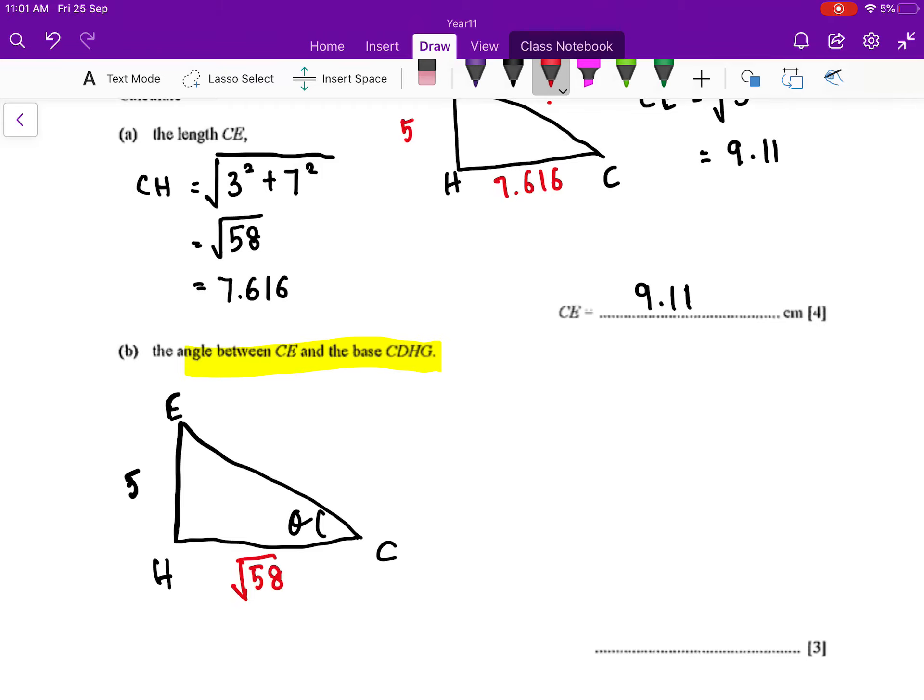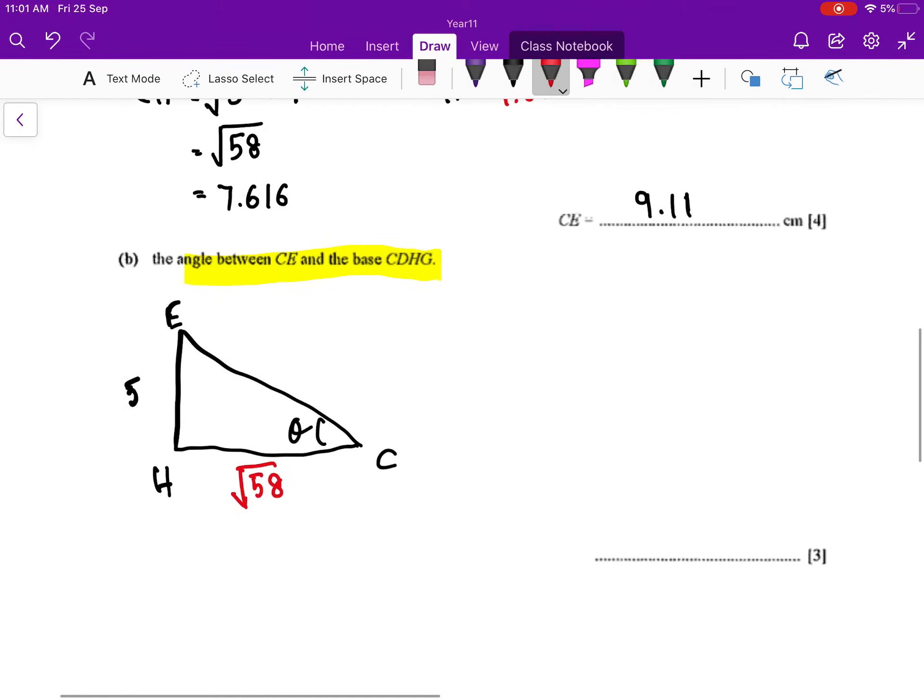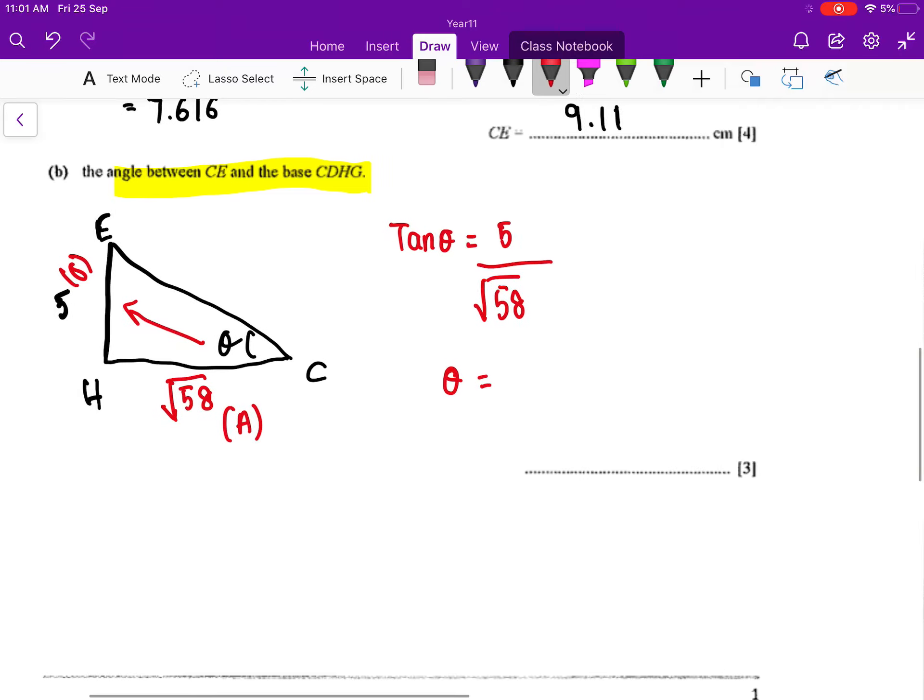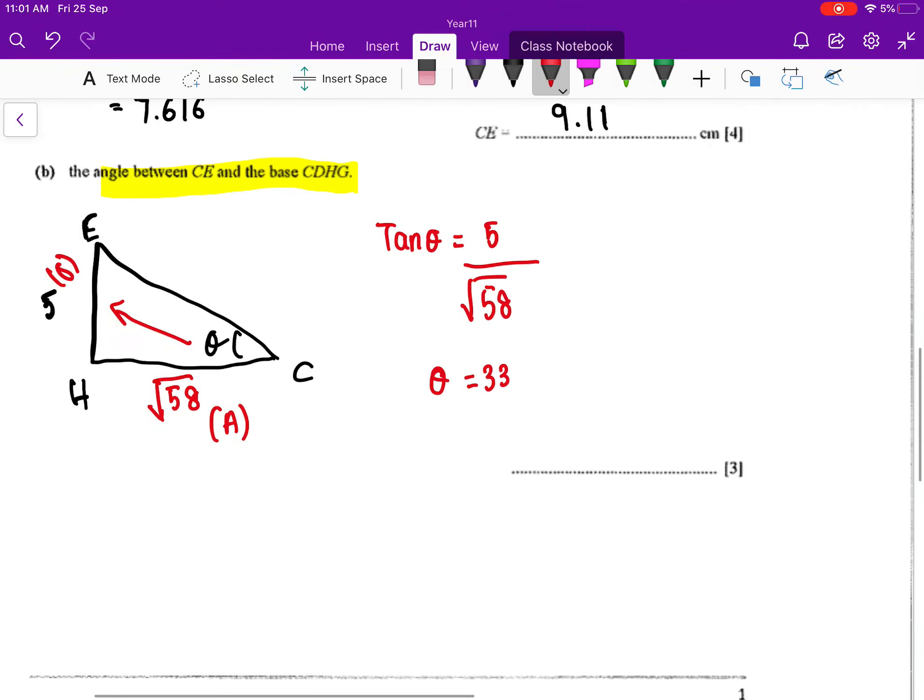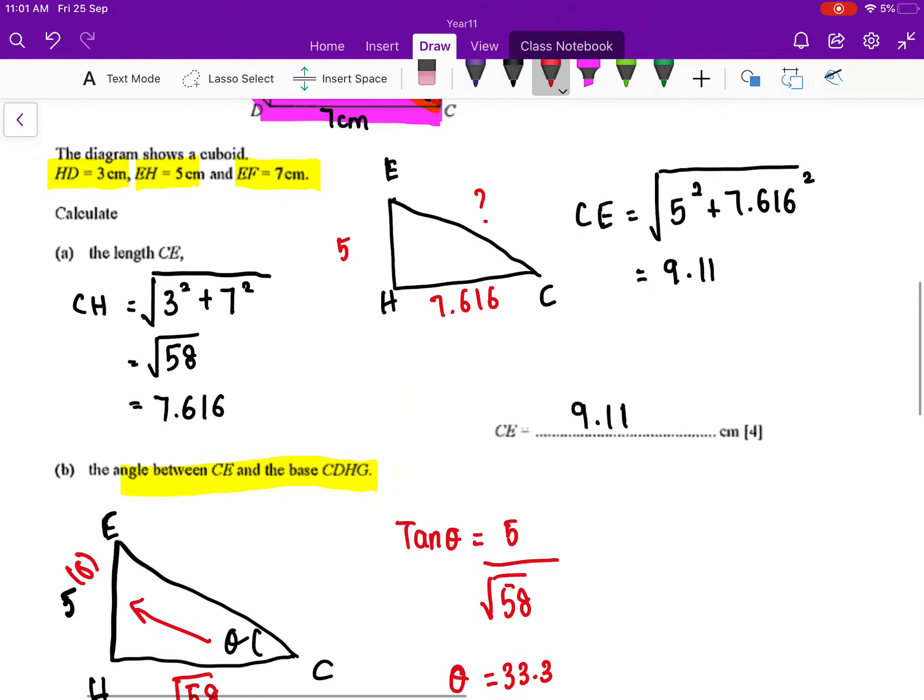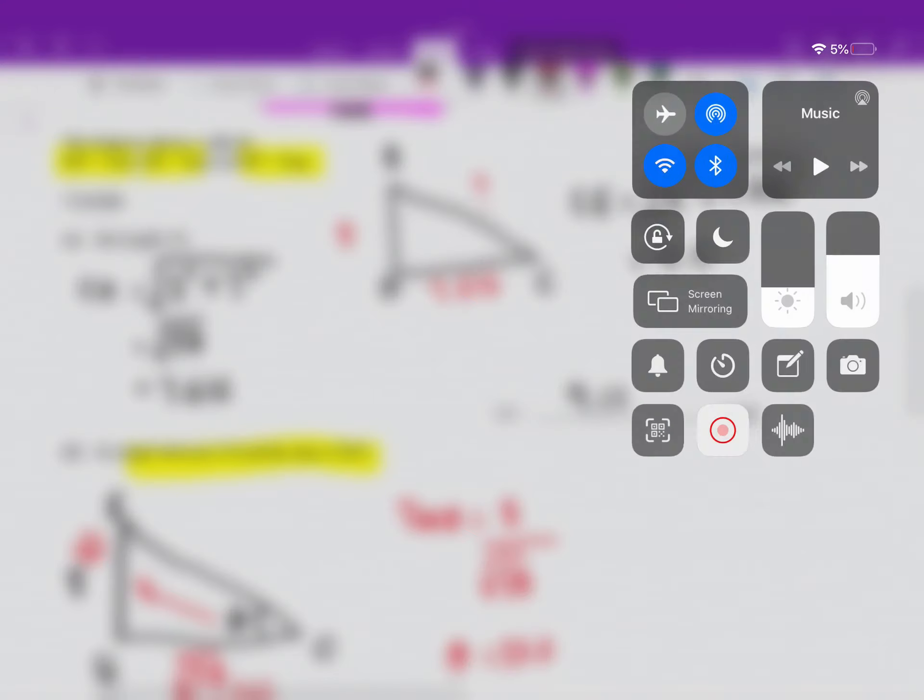So since this is the, you can use what we call SOHCAHTOA to get the answer. So this is your opposite and this is your adjacent, so I'm going to use tangent. So tangent will be opposite over adjacent, so 5 out of √58. So if you press this in your calculator, you will have 33.3. So since this is the angle, I'm going to take my answer to one decimal place.